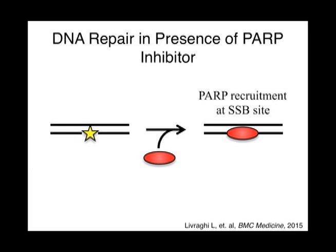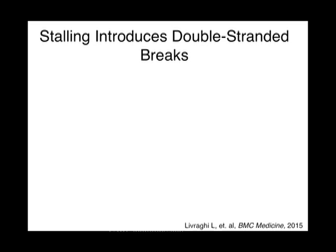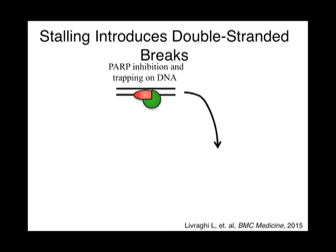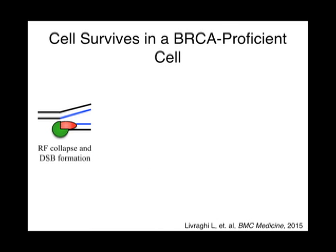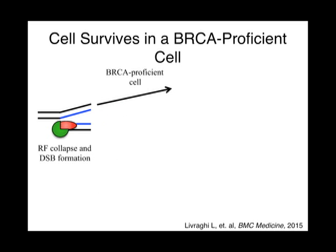In the presence of a PARP inhibitor, PARP is still recruited to a single-stranded break site. However, PARP can no longer activate PARP-dependent DNA repair proteins because its catalytic activity can no longer be powered by NAD+. Therefore, PARP remains bound to the DNA, stalling the replication fork through DNA replication. This stalling leads to double-stranded break formation. In a BRCA-proficient cell, this is repaired through homologous recombination, so PARP inhibitors will not affect the cell's vitality and ultimately the cell survives.